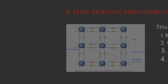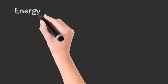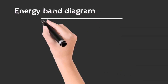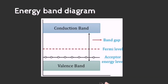You will get a better idea about the same process by seeing the energy band diagram. Here, the acceptor energy level shows the presence of extra holes in the structure. So when external heat is provided, the electrons present in the valence band move to the acceptor energy level, thereby decreasing resistance and increasing conductivity. These are also known as acceptor impurities, as they present extra holes in the structure.